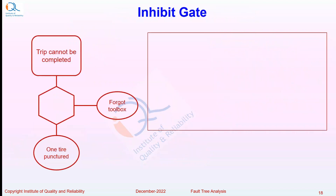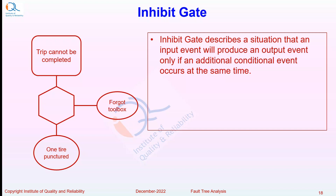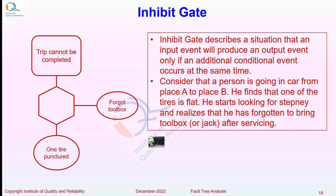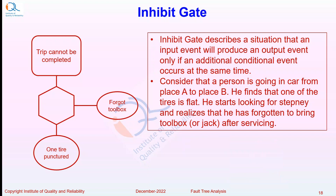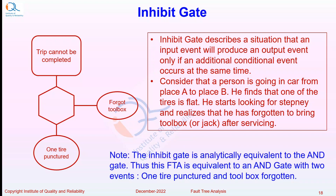The Inhibit gate describes a situation where an input event produces an output event only if an additional conditional event occurs at the same time. For example, a person driving from place A to B finds a flat tire, then realizes they have forgotten their toolbox and jack after the last servicing. The Inhibit gate is analytically equivalent to the AND gate — this FTA is equivalent to an AND gate with two events: one tire punctured and toolbox forgotten.